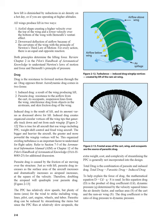Parasite drag is caused by the friction of air moving over the structure. Just as with lift, parasite drag increases as the surface area increases and dramatically increases as airspeed increases — at the square of the velocity. Therefore, doubling the airspeed will quadruple your parasite drag. The PPC has relatively slow speeds but plenty of items — wing, lines, pilot, cart, engine, wheels, and tubes — for the wind to strike. Parasitic drag can be reduced by streamlining, but since the PPC flies at relatively slow airspeeds, the extra weight, cost, and complexity of streamlining is generally not incorporated into the design.